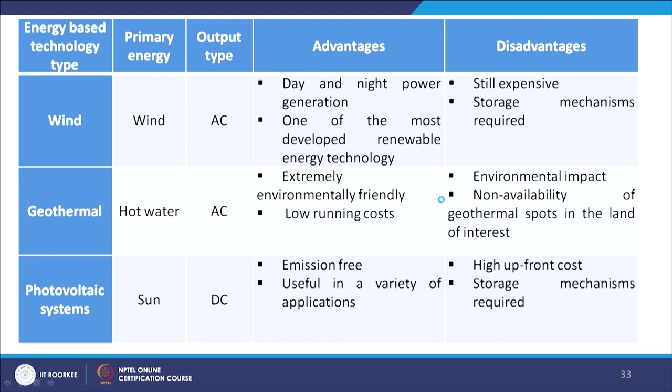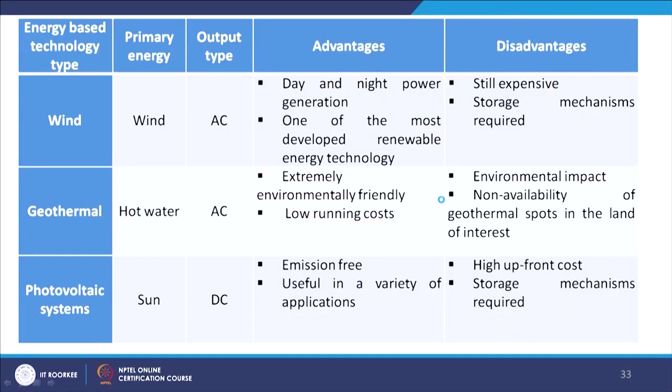One of the most important distributed generation sources in the current scenario is photovoltaic systems. The primary energy source is the sun and the output type is DC. The major advantage is emission-free operation and usefulness in a variety of applications. The disadvantage is high upfront cost — though it keeps reducing over time — a storage mechanism is required, and a lot of land is needed for installation.